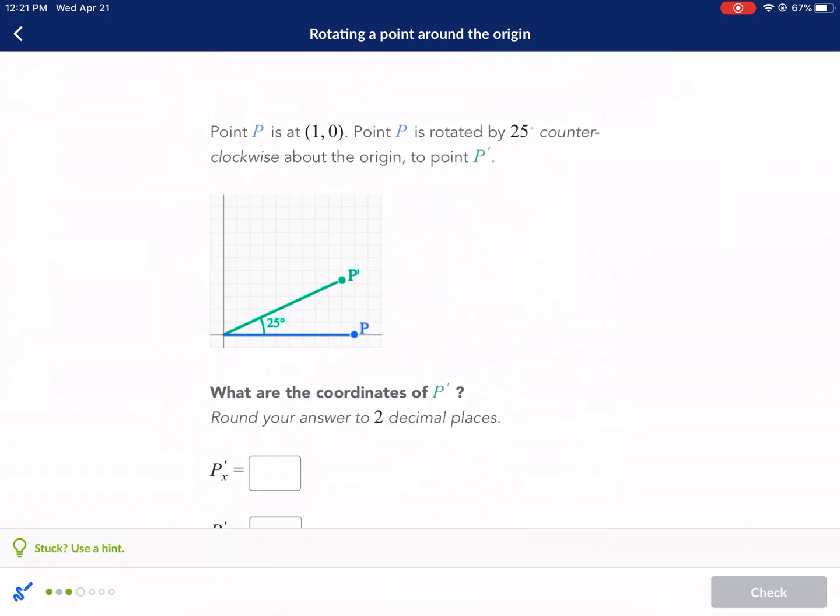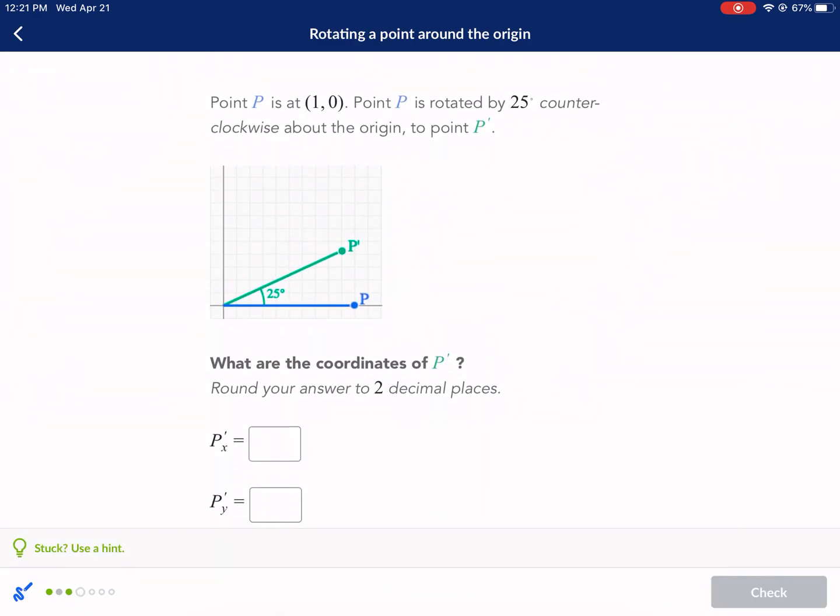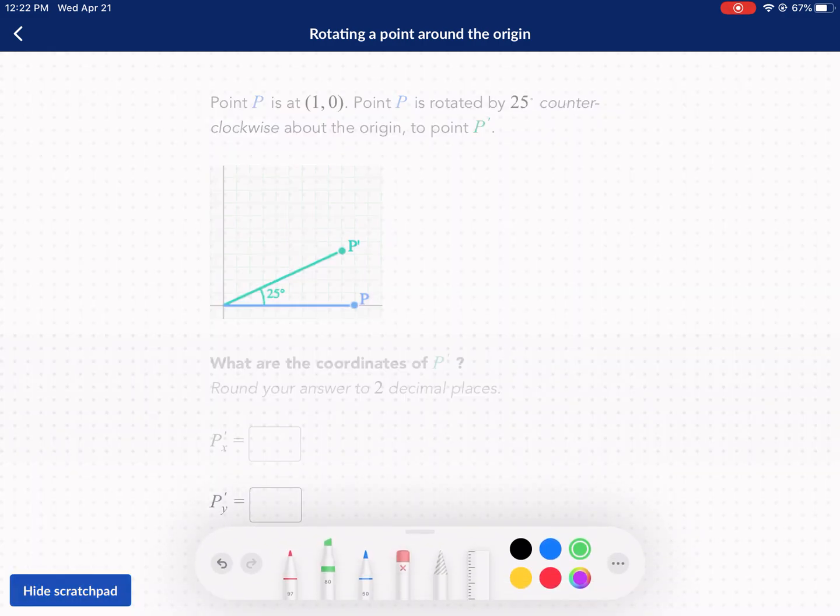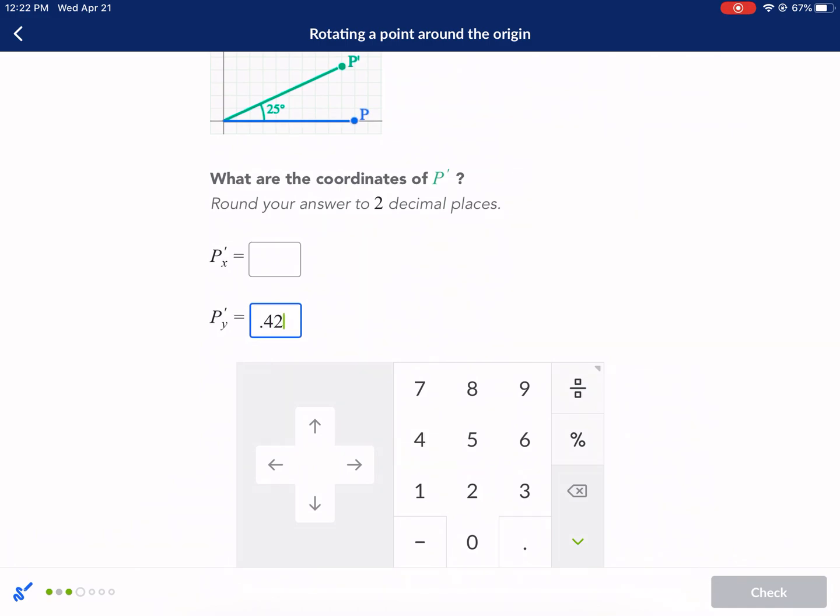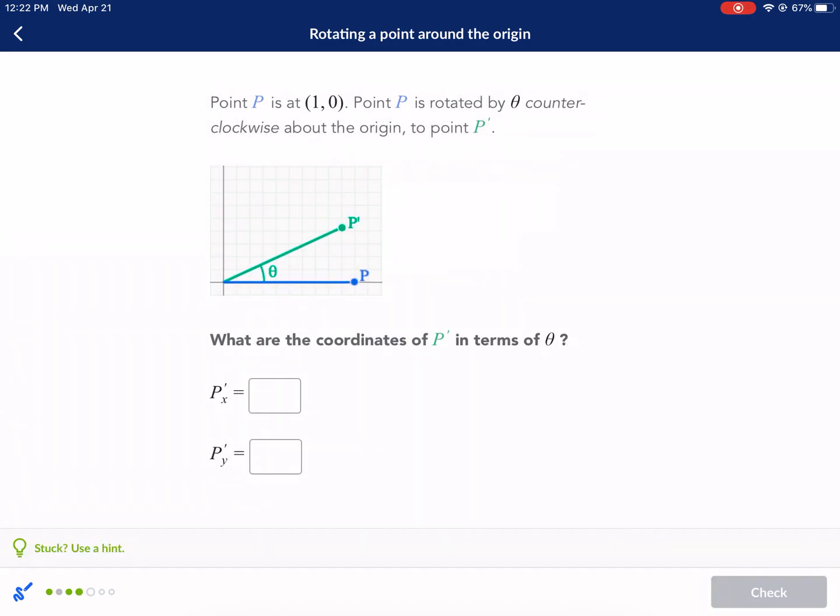Next question. Point P is rotated 25 degrees, counterclockwise about the origin to point P prime. Round your answers. So we're going to do the sine for the y coordinate. So sine for 25, that will give us 0.42. So all I'm typing in is sine 25. And I get 0.42. And then for my x, I'm using cosine. So cosine of 25. And that's going to give me 0.91. And they're both positive because they're in the first quadrant. Next one.